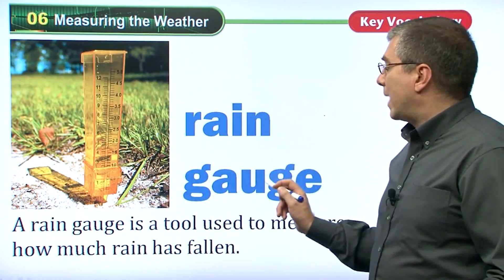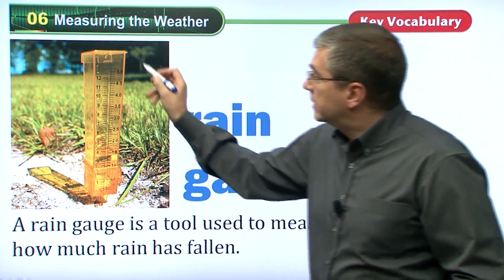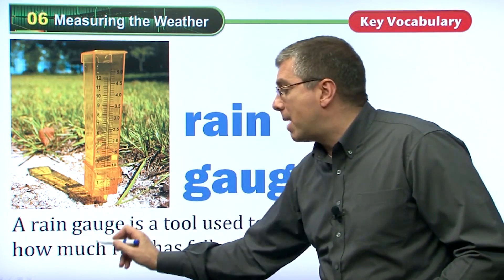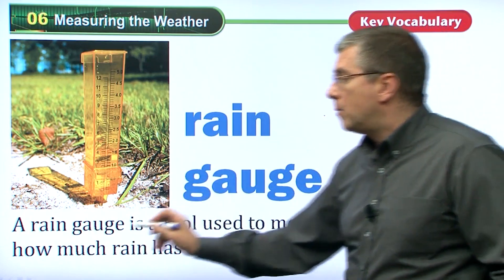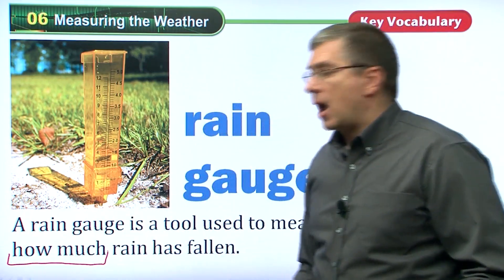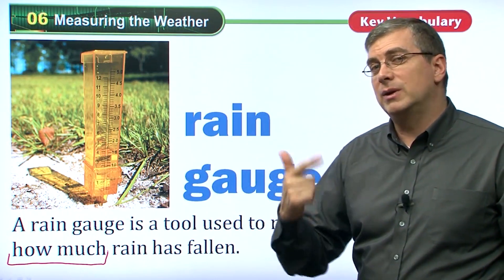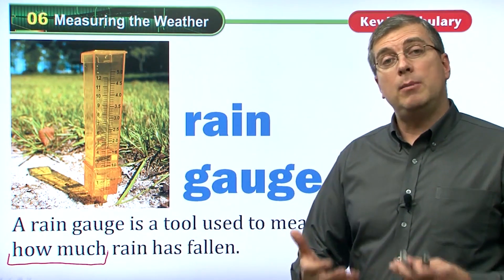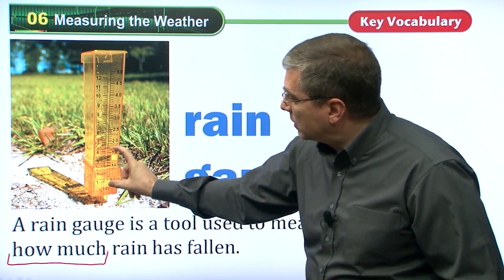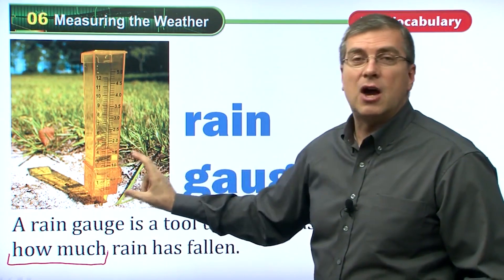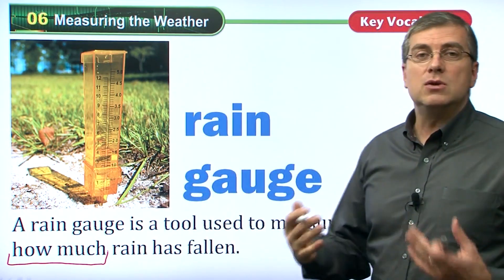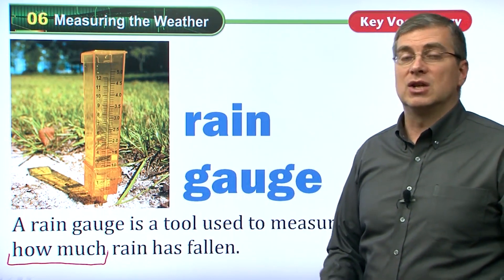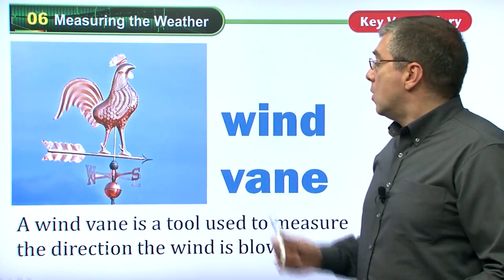Here we have a rain gauge. A rain gauge is another tool. A rain gauge is a tool used to measure how much rain has fallen. How much — are we talking about size, speed, or amount? We're talking about amount — how much rain came down. We use a rain gauge, and if this fills up, we can see how much rain came down.